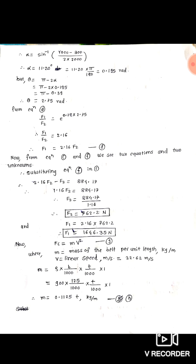Now from equation D: f1 ÷ f2 = e raised to mu×theta. With the values of mu and theta we get f1 ÷ f2 = 2.16, therefore f1 = 2.16 × f2 — equation F. We now have two equations and two unknowns. Substituting equation F into equation C: 2.16 × f2 − f2 = 884.17.